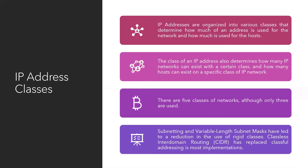IP addresses are organized in various classes that determine how much of an address is used for the network and how much for the host. The class also determines how many IP networks can exist within a class and how many hosts can exist on a specific class of network. There are five IP address classes, although only three are commonly used. Subnetting and variable-length subnet masks have led to reduced reliance on rigid classes, and classless inter-domain routing — CIDR — has replaced classful addressing in most implementations.